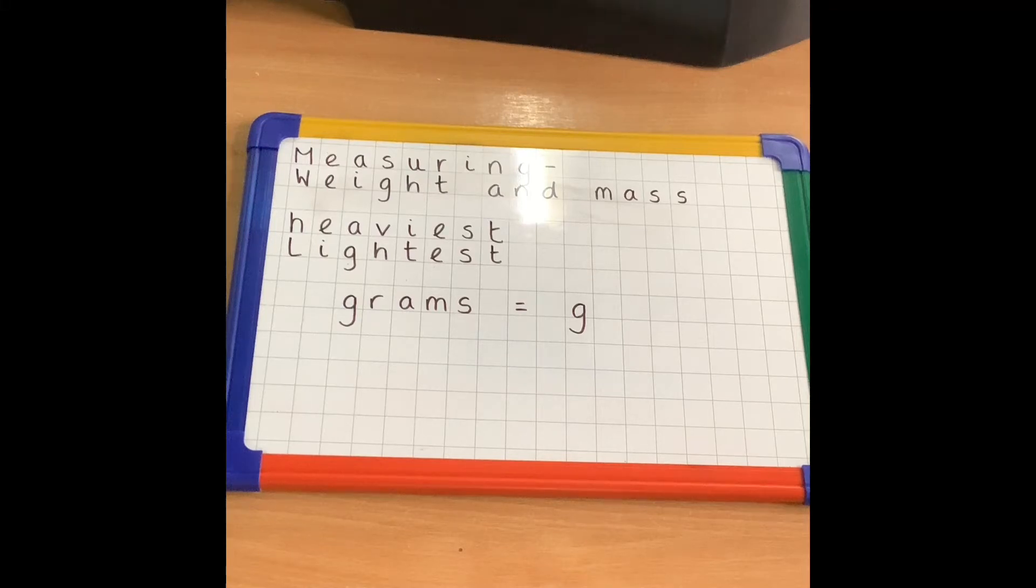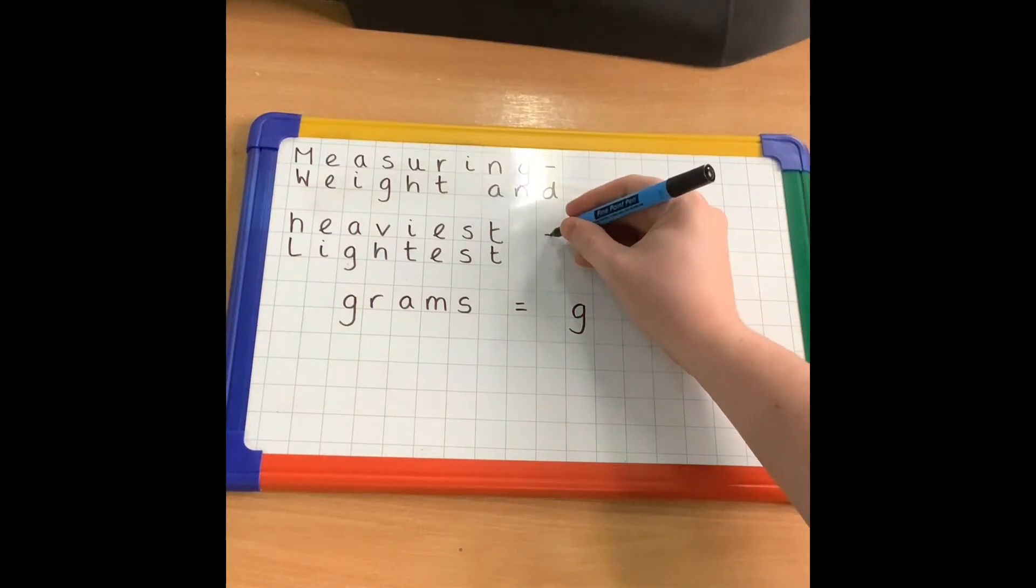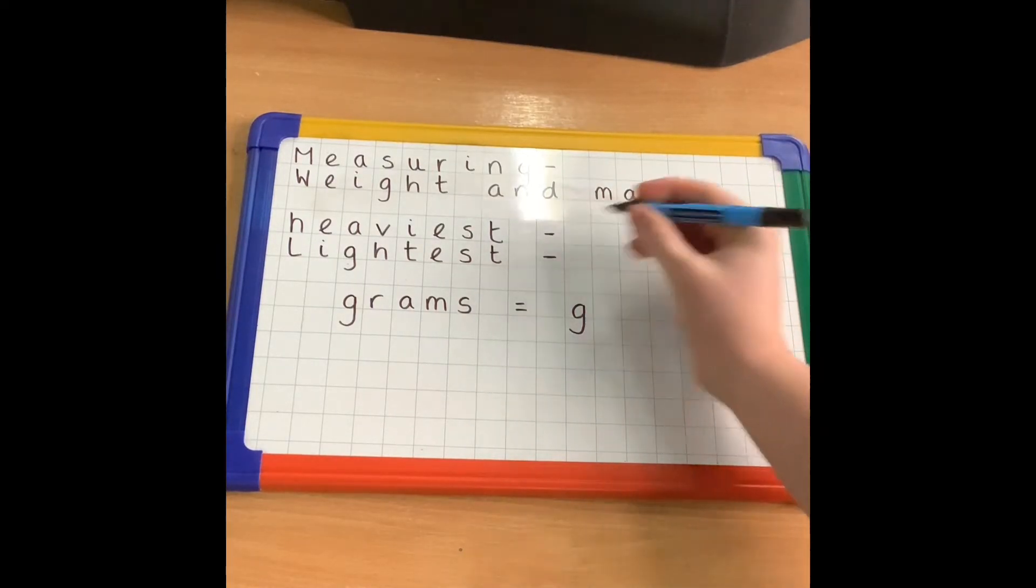Hi everyone, we're going to carry on with measuring today. Today we're going to look at measuring the different weight and mass of objects. When we talk about weight or mass, we're talking about how heavy things are. Objects that are the heaviest or objects that are the lightest - heavy objects and light objects.